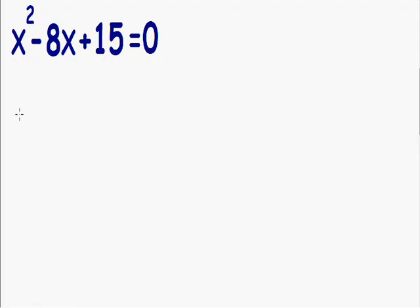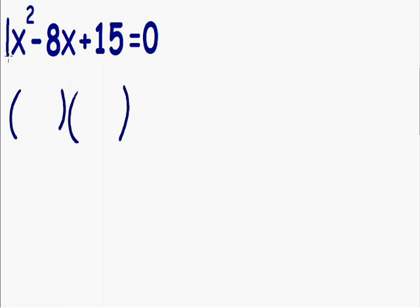Let's try and factor the left hand side of the equation. Notice we have a trinomial: an x squared term, a negative 8x term, and a constant of 15. Any time you factor a trinomial, it's always going to factor into two parentheses. Notice there is an implied 1 in front of the x squared term — there's always an implied 1 if there's nothing there. Any time there is a 1 in front of the x squared term, the first two terms in your parentheses are going to be x, because x times x gives us 1x squared.